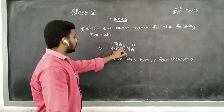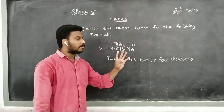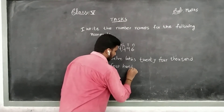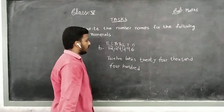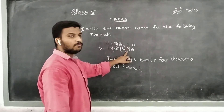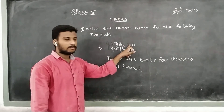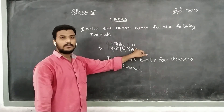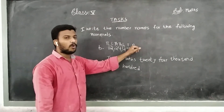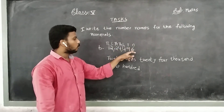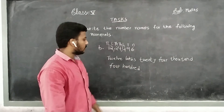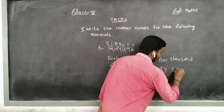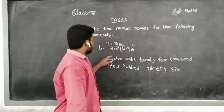Then in the place of hundreds we have the value 4. 4 into 100 — how much? 400. Then in the place of tens we have the value 9. 9 into 10 equals 90. And in the place of ones we have the value 6. 6 into 1 equals 6. We combine tens and ones: 90 plus 6 equals 96.